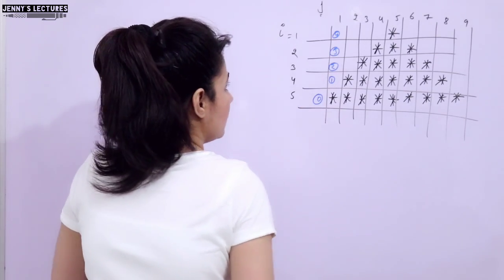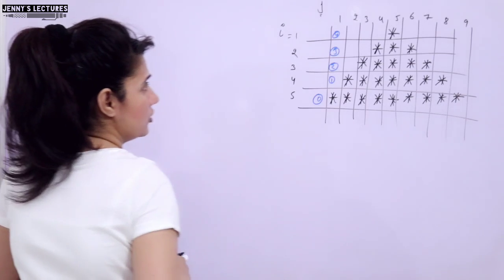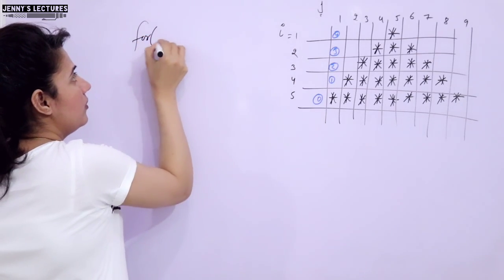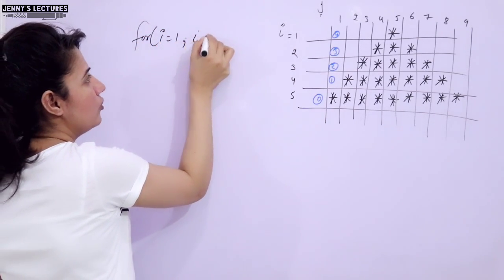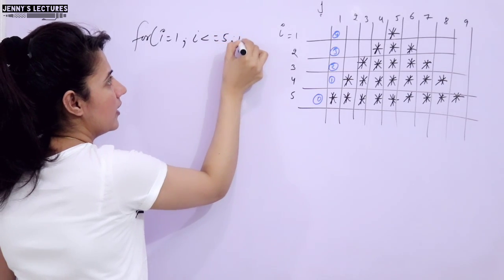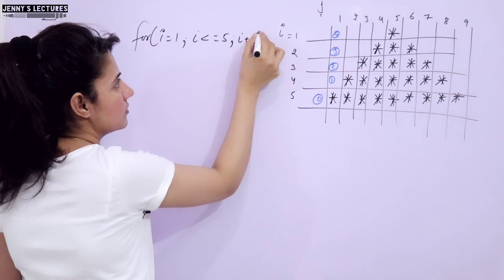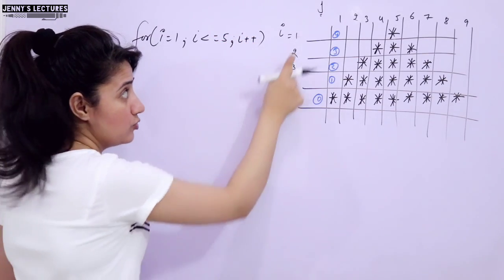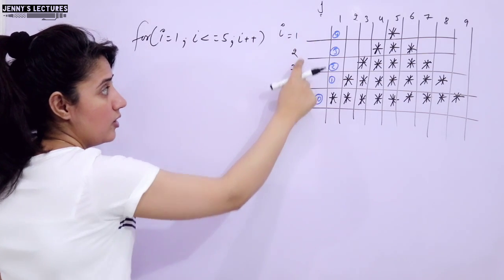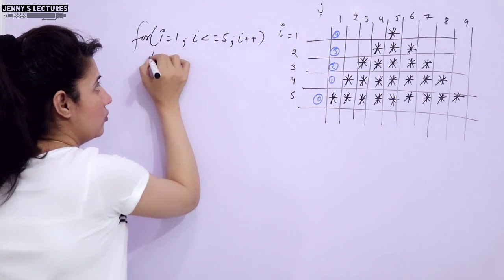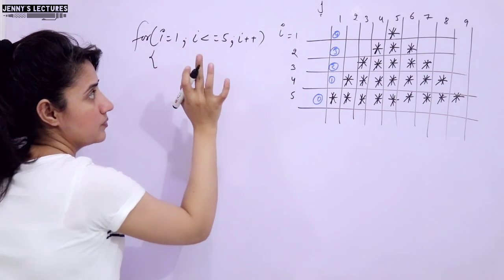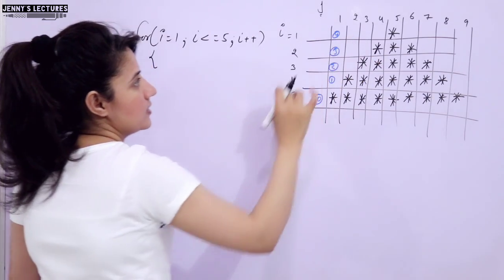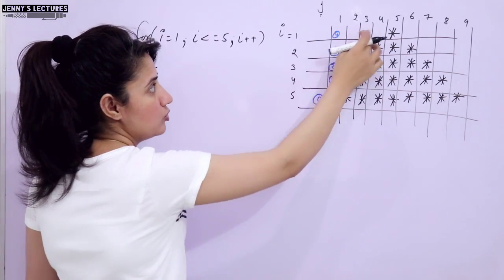So three loops are required. The outer loop simply goes from i equal to 1 to less than or equal to 5, with i++, because we have 5 rows.